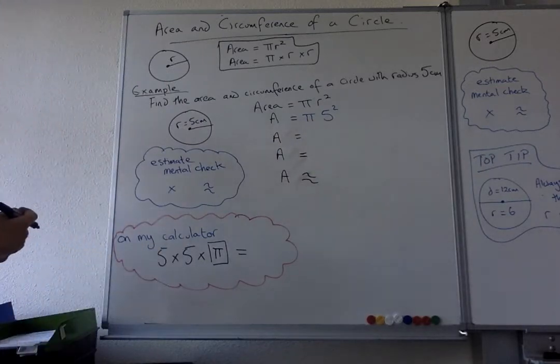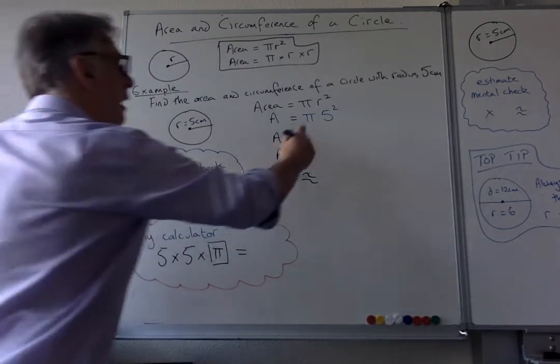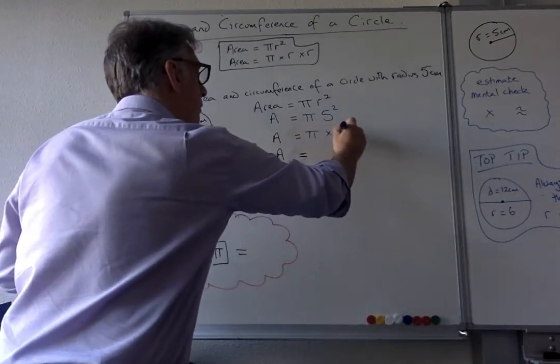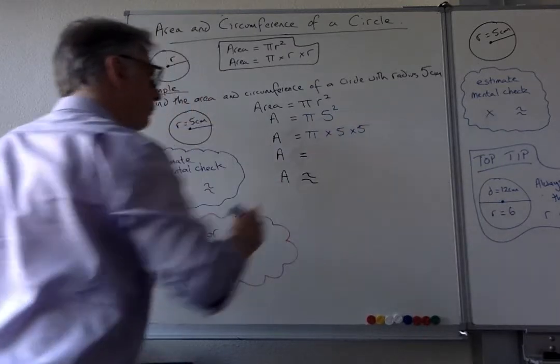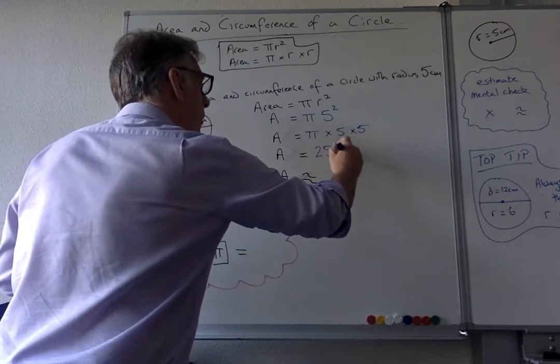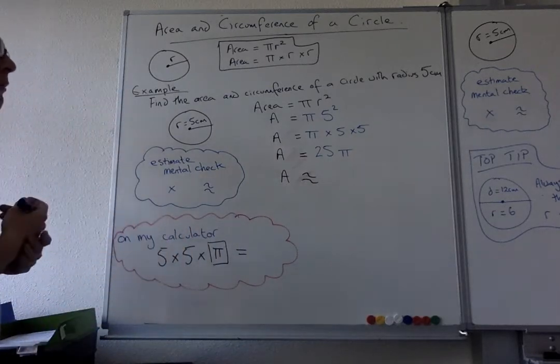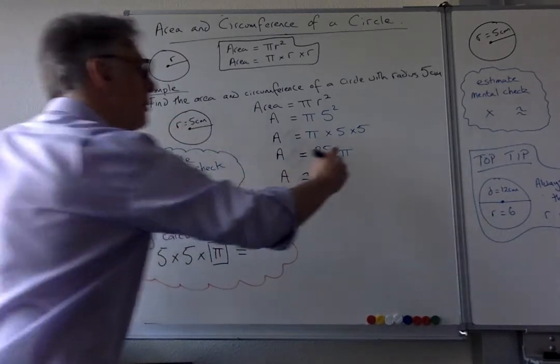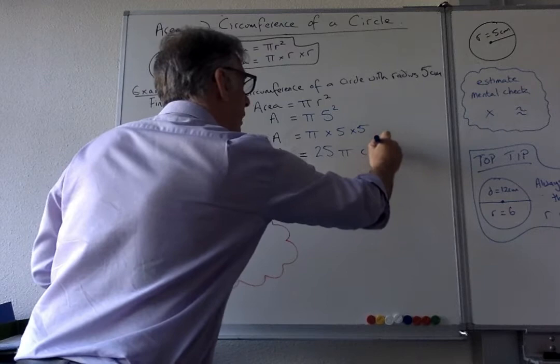So what we've got is 5 squared. What does 5 squared mean? It means that you're going to do π times 5 times 5, and that gives you 25π. Now in high school you would leave your answers in terms of π, but you have to remember to put the units on, which is centimeters squared.